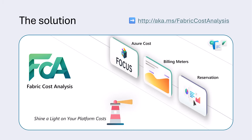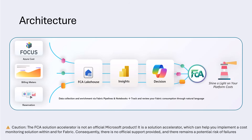Built entirely with Microsoft Fabric itself, FCA uses pipelines and notebooks for robust data extraction and transformation, showcasing Fabric's full power. Data is stored both in raw form and as Delta Parquet, so you can analyze it straight from Power BI Direct Lake. FCA offers ready-made reports and lets you customize or build your own, and it's easy to connect to other data sources for deeper insights.